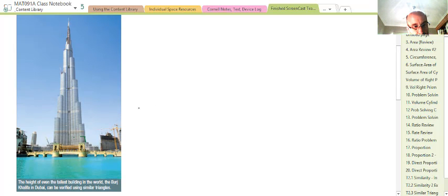The Burj Khalifa is the tallest building in the world. It's in Dubai in the Middle East, in a country called the United Arab Emirates or UAE. We could even determine the approximate height of this building by using similar triangles.